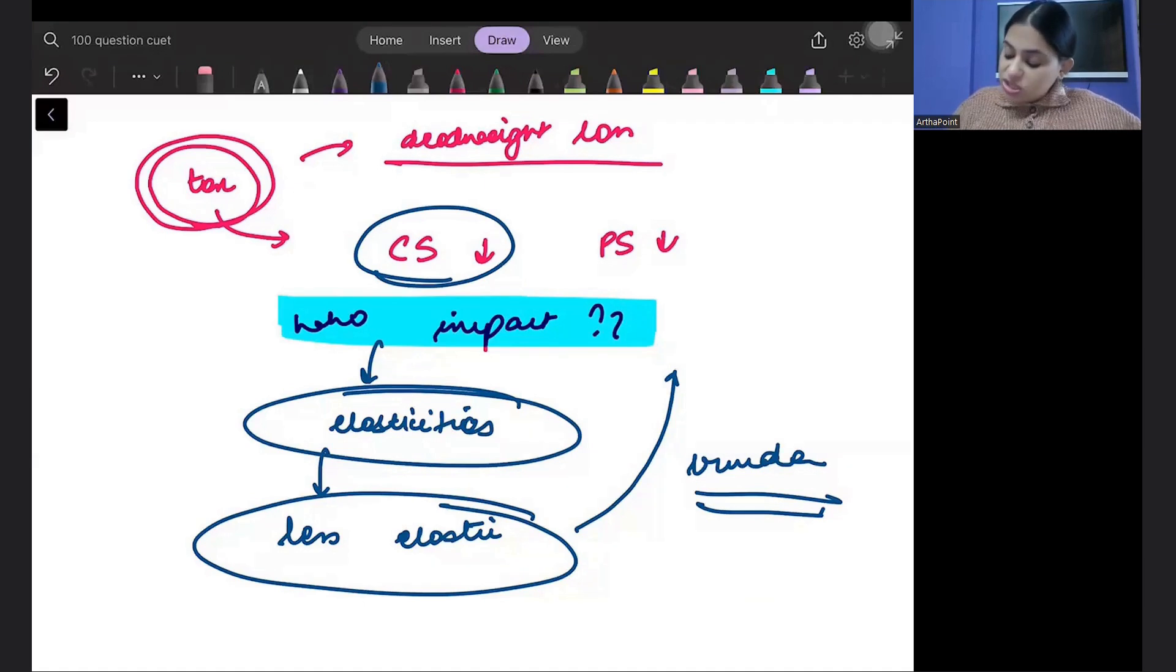So Bitta, whichever consumer or producer, whoever is less elastic, whoever has less elasticity, they will face more burden of the tax. And if there's more burden, then your surplus will decrease more. You are in a loss, you are paying more tax. So your surplus will fall.